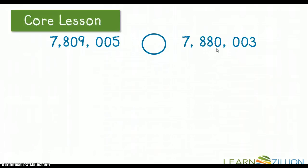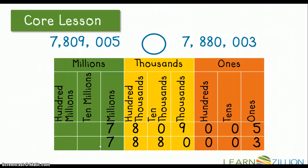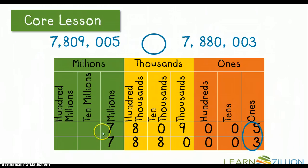Let's take a look at another couple of numbers: 7,809,005 and 7,880,003. I'm going to write these numbers on my place value chart and do exactly the same thing as before. I'm going to start with the digits that have the greatest value. The 7 has the greatest value in each number because it's in the millions place — these 7s are the same, so the numbers are equal so far. I'm going to go to my hundred thousands place — these two 8s are the same, so they are still equal.